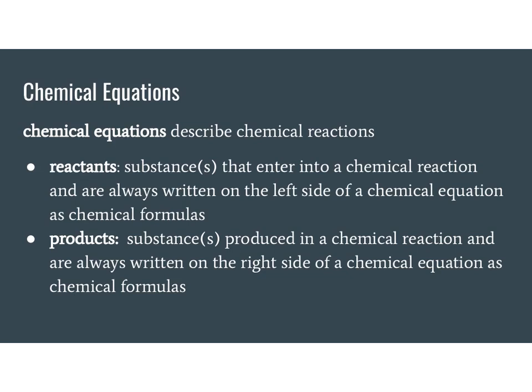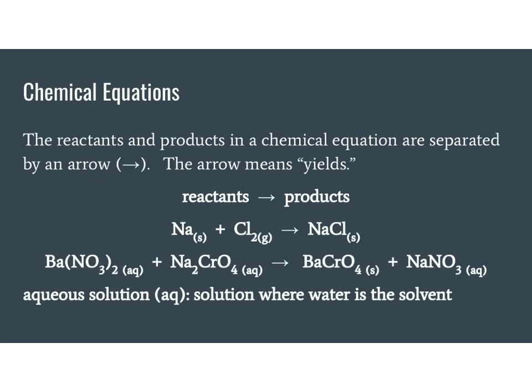When we have chemical reactions or chemical changes, we use chemical equations to describe them. On the left side of a chemical equation are the reactants. It's what we start with. And then on the right side of the equation are the products, the things that are produced throughout the course of a chemical reaction. Reactants and products are separated by an arrow. The arrow means yields. Please do not use an equal sign in between the reactants and the products. This is not a mathematical equation. This is a chemical equation.